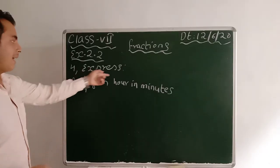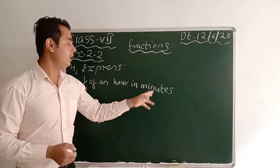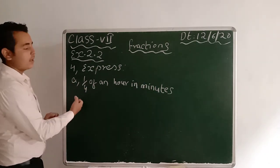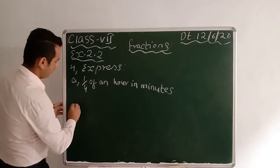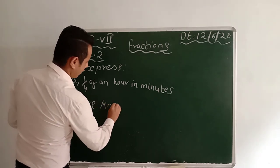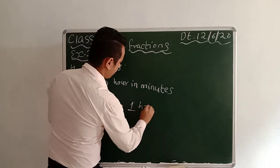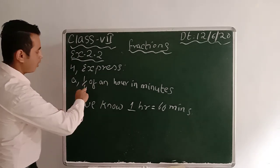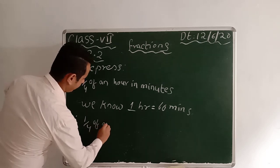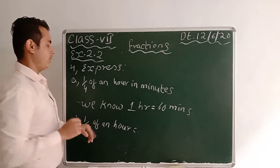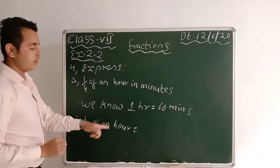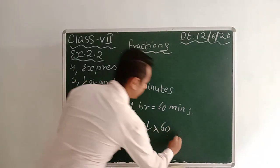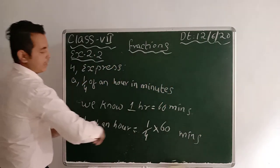Here is another question, number 4. Number A: 1/4 of an hour in minutes. We should convert 1/4 of an hour into minutes — how many minutes will it be? We know 1 hour equals 60 minutes. So 1/4 of an hour means 1/4 of 1 hour. An hour means 1 hour, don't get confused.